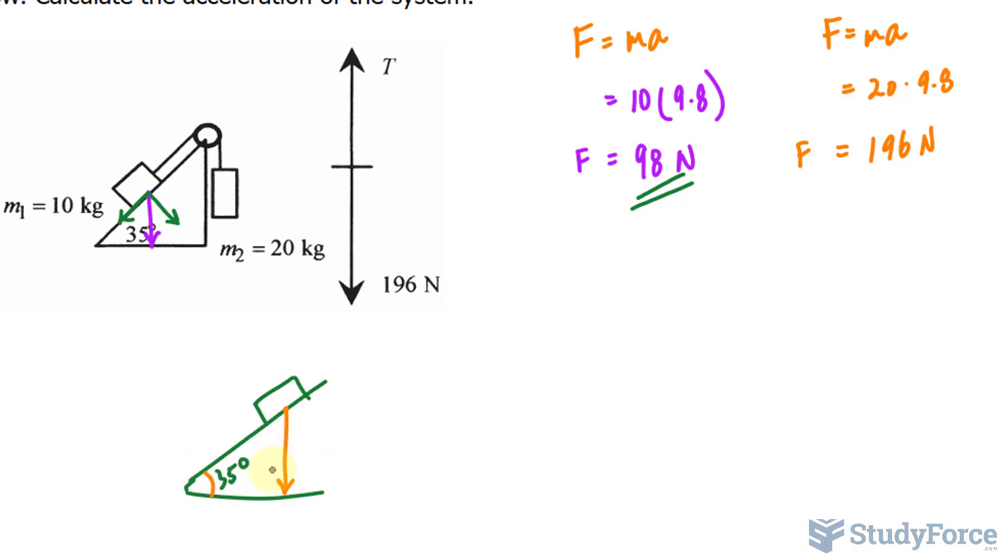If this is 35 and we have a right triangle here, then the angle that this makes is 55 degrees.